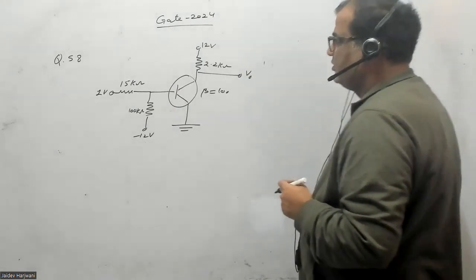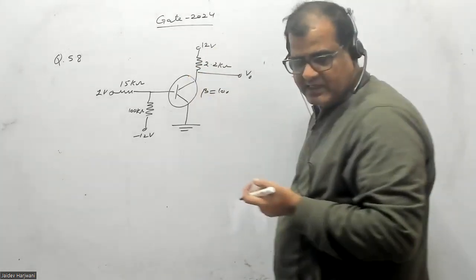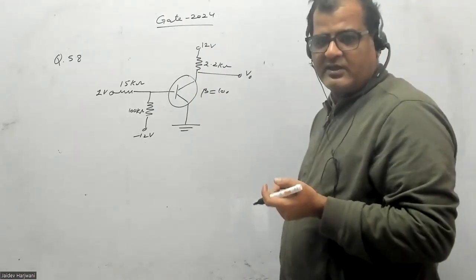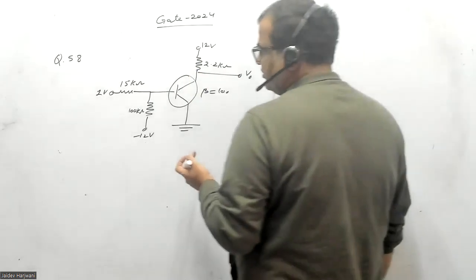So let us now calculate this V naught. In order to calculate V naught, VCC is given as 12 volts. We need to find IC. So we will see whether IC is flowing or not. The reverse saturation current is given as zero.